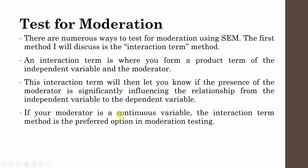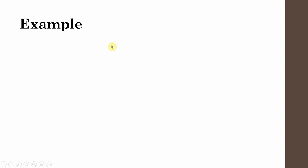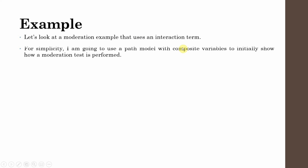How do we test for moderation? There are numerous ways to test for moderation using SEM. The first method is the interaction term method, where you form a product term of the independent variable and the moderator and assess its impact on the dependent variable. If your moderator is a continuous variable, the interaction term method is the preferred option.